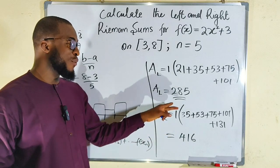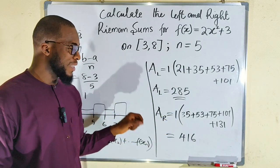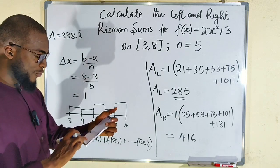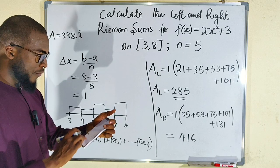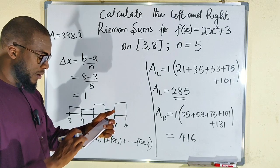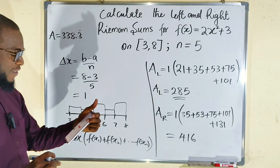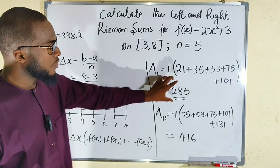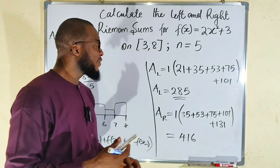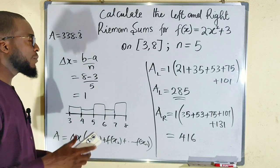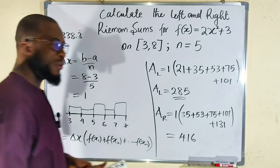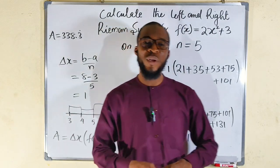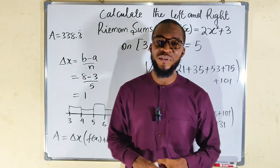If you take the average of the left and right Riemann sums, the result is closer to the actual area. Here: (285 plus 416) divided by 2 equals 350.5, which is indeed closer to the actual area of 338.3. This is our second problem on Riemann sums. Thank you for watching — share with your colleagues and subscribe for more videos.